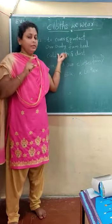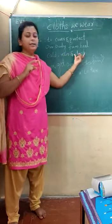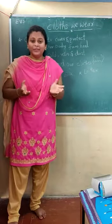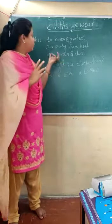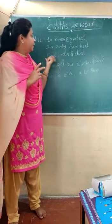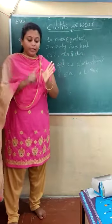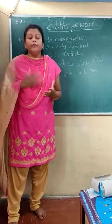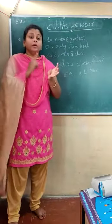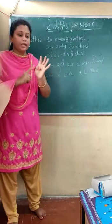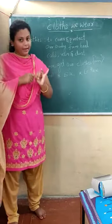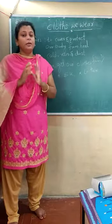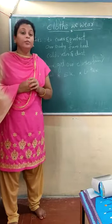Clothes protect our body from cold in the rainy season, from rain and dust. Just assume if there is no cloth on our body — what is going to happen? We are going to get direct effects of heat, cold, rain, and dust. So clothes are very important: first to cover our body, and then to protect our body from heat, cold, rain, and dust.